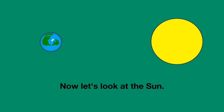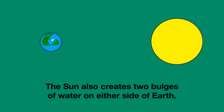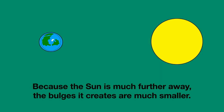Now let's look at the Sun. The gravitational pull of the Sun also creates two bulges in the water on either side of Earth. But because the Sun is much, much further away than the Moon, the bulges it creates are much smaller.